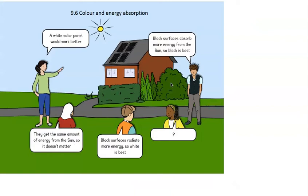You may have come across concept cartoons, which are a great way to draw out students' misconceptions, get them discussing physics and help them change their understanding. In this example the characters are discussing what colour a solar panel should be. You can decide who's right, who's wrong, who's partly right or partly wrong, before offering your own explanation.